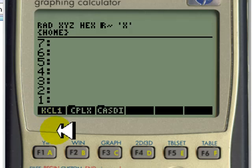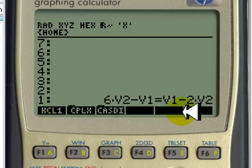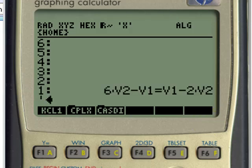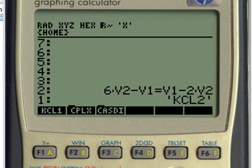We have the variable KCL1. And we type another equation, which is this one. And we want to call that KCL2. Apostrophe. Alpha. Alpha. KCL2. Kill alpha. Enter. Store.